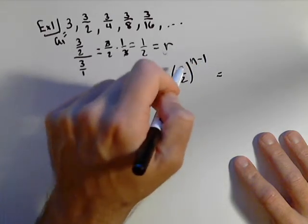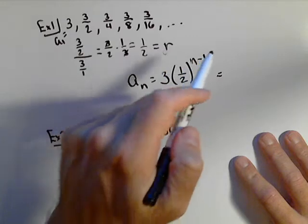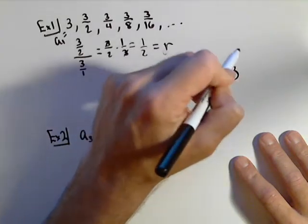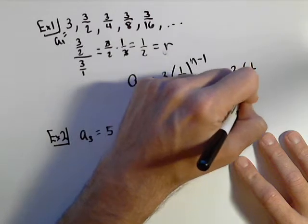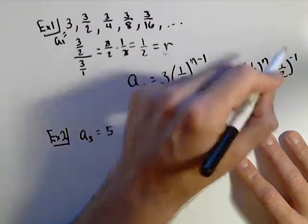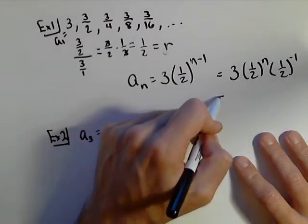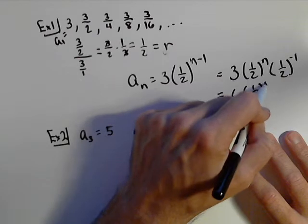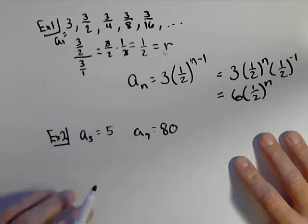Or, by properties of exponents, we could actually kind of back this up one. It would be three times one half to the n, times one half to the negative one. One half to the negative one is two. So six times one half to the n is the other way you might see this one written.